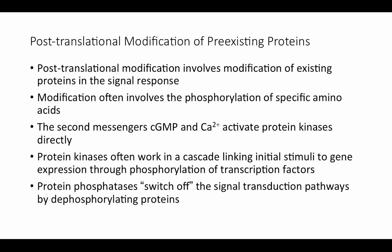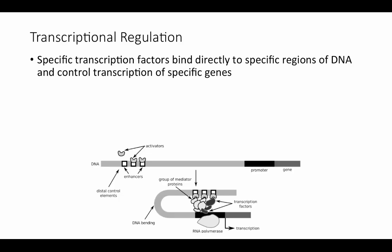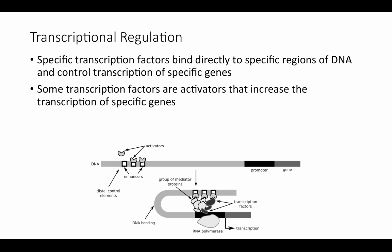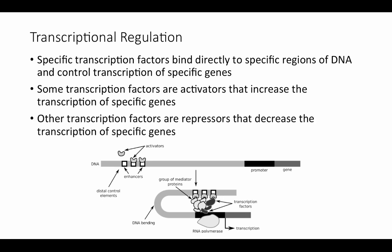Protein phosphatases switch off signal transduction pathways by dephosphorylating active proteins, changing them back to their inactive form. For transcriptional regulation, specific transcription factors bind directly to specific regions of DNA and control transcription of specific genes. Some transcription factors act as activators that increase transcription — binding regions adjacent to or at some distance from the promoter, with the DNA changing shape to bring enhancer regions close to the transcription initiation complex. Other transcription factors act as repressors that decrease transcription of specific genes, working in a similar way.